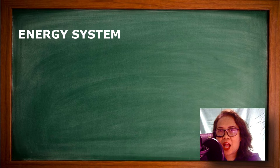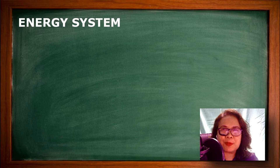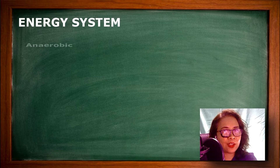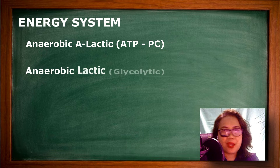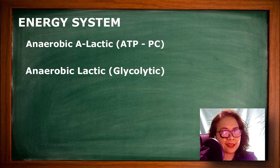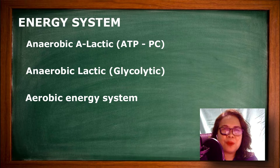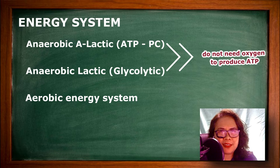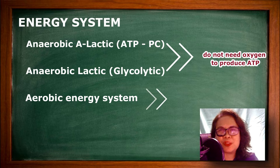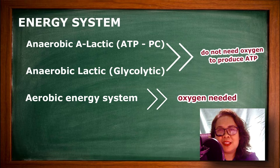Our body has 3 systems that produce ATP: 1. Anaerobic alactic, or ATP-PC; 2. Anaerobic lactic, or glycolytic; 3. Aerobic energy system. Both anaerobic alactic and anaerobic lactic do not need oxygen to produce ATP, but the aerobic energy system needs oxygen.